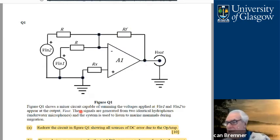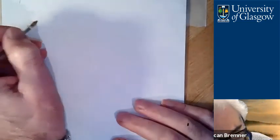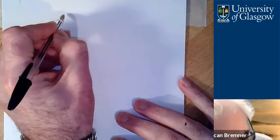In principle that seems to do what it suggests - it mixes the signals together and appears at the output. Let's look at the questions. The first part is to redraw the circuit showing all sources of DC error due to the op amp. First of all, I will draw out the original schematic just for reference.